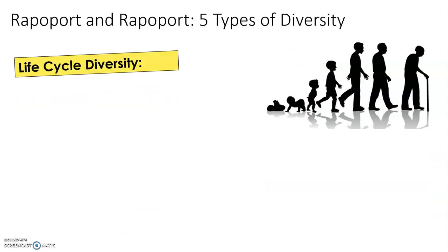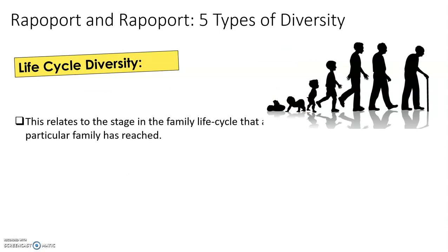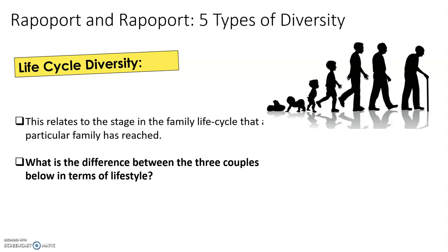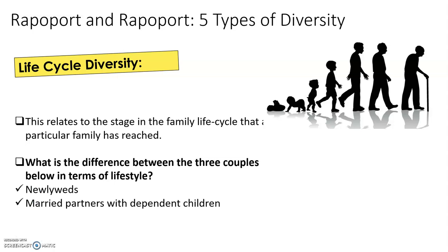Then we have life cycle diversity — your family can change depending on the stage of your life you're currently in. Think about newlyweds, married partners with dependent children, and retired couples, and consider how they might spend their leisure time and how much disposable income they have. For example, being married with a child means less disposable income than at 27 or 28, and the responsibilities are greater than they might be in retirement.